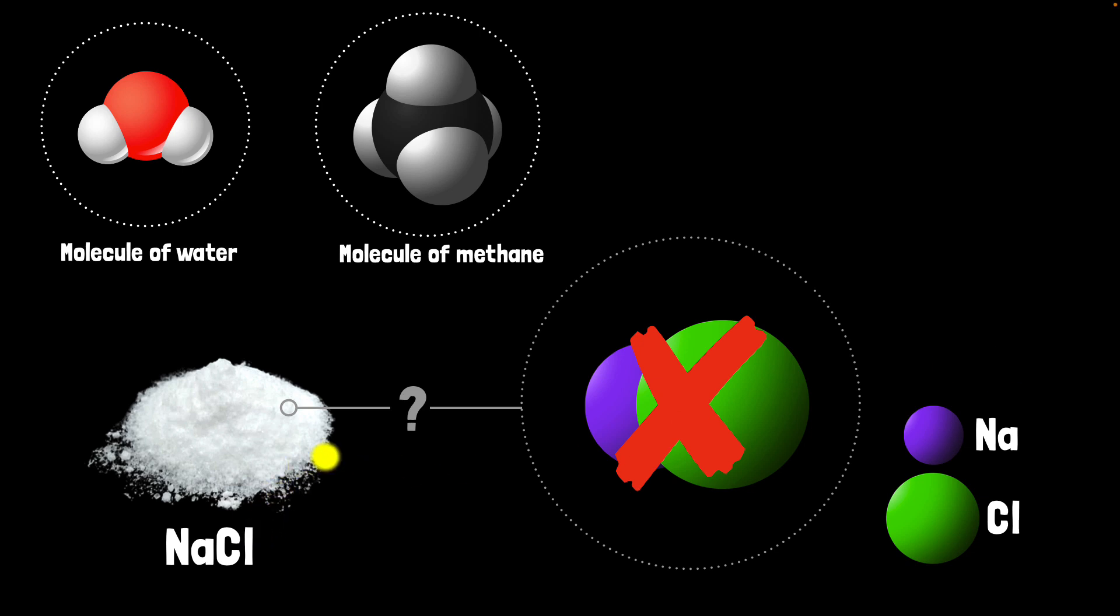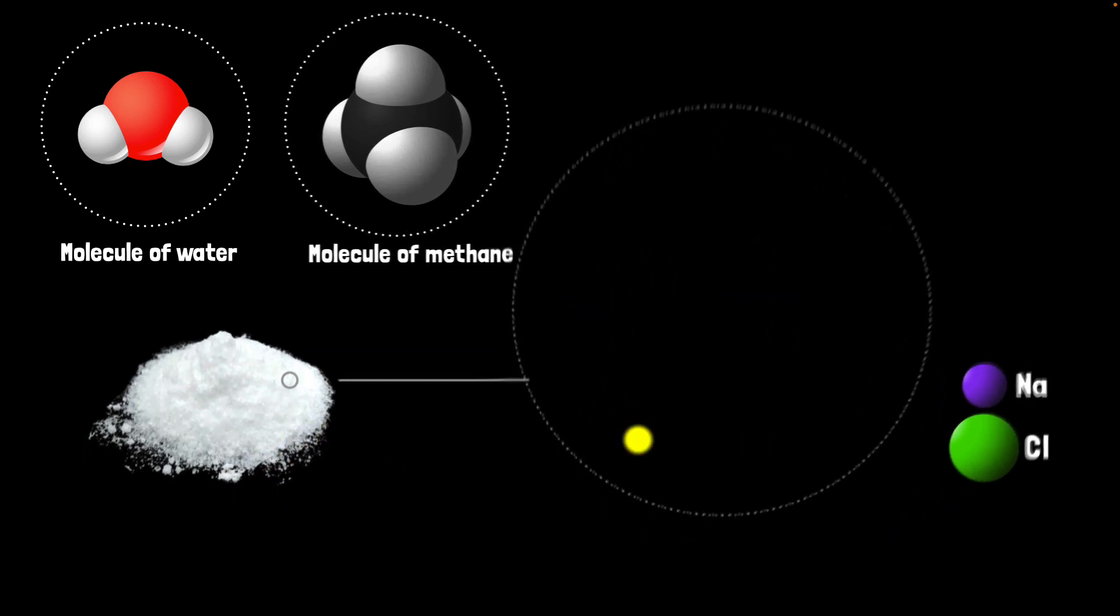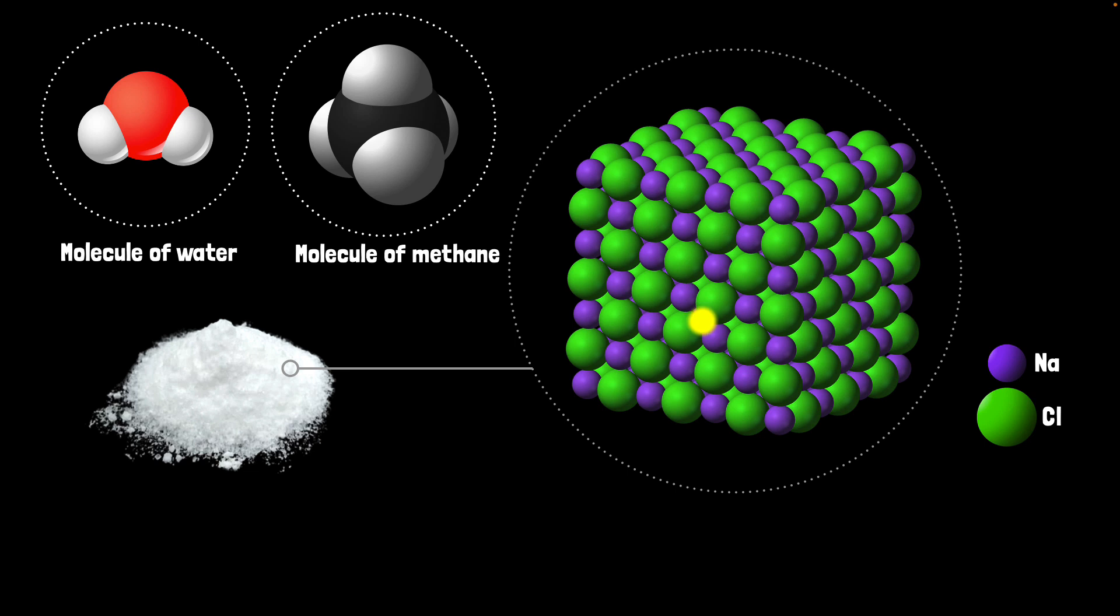So what will we find if we were to zoom into NaCl? We'll get something like this, where you find trillions of Na's and trillions of Cl all connected to each other. We call this a crystal of sodium chloride, crystal of NaCl. You probably heard of this word crystal. It means we have an orderly repeating pattern. This looks very different, right?